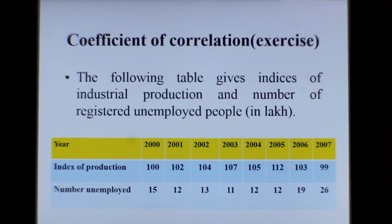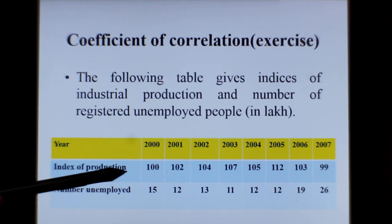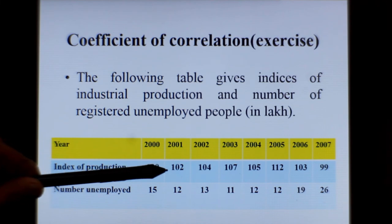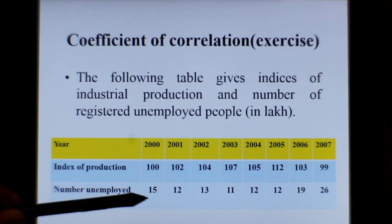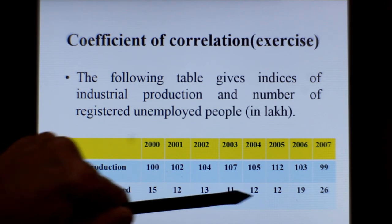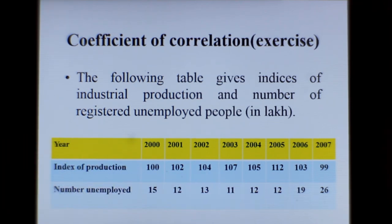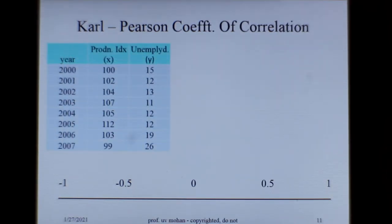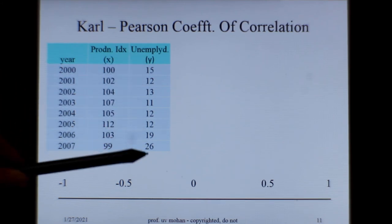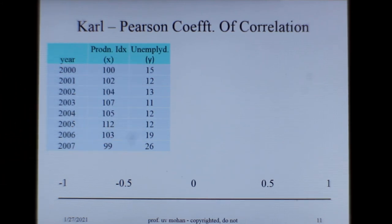Now let us take this example. This is the index of production over 8 years and the number of unemployed. Now let us build up the table. This is the year, and this is the production index, and this is the number of unemployed.